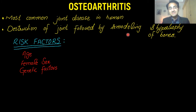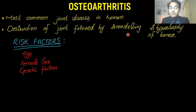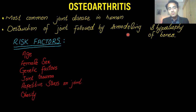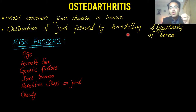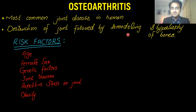What are the risk factors? Increased age — it is a disease of old people. Female sex. Genetic factors also play an important role. Any history of joint trauma. Repetitive stress on the joint — any job or task that causes repetitive stress on the joint. Obesity on weight-bearing joints.